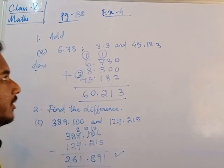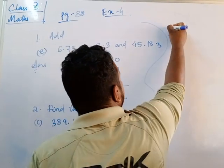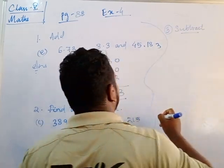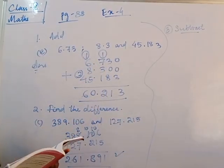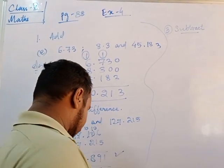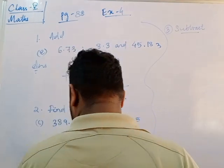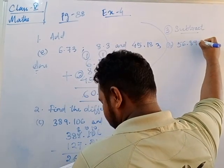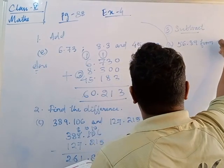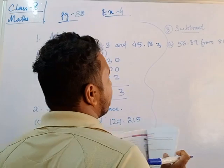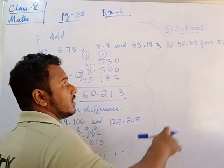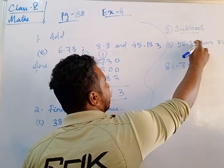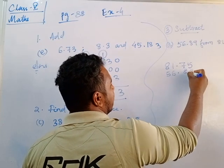Next is question number 3, subtraction. For A number: 560.89 from 810.75. The 'from' number is written first — so write 810.75 on top, then 560.89 below. Now we have to subtract.